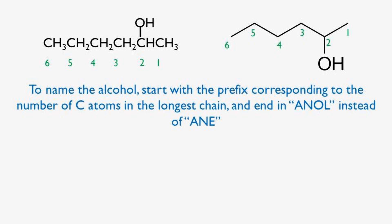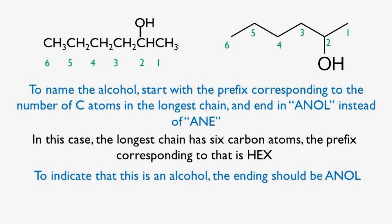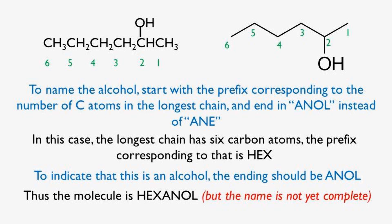Rule number two. To name the alcohol, start with the prefix corresponding to the number of carbon atoms in the longest chain, and end in -anol instead of -ane. In this case, the longest chain contains 6 carbon atoms. The prefix corresponding to 6 is hex. Therefore, we write hex and end in -anol, and the name becomes hexanol.